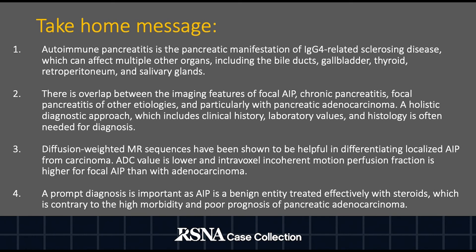Take-home message: autoimmune pancreatitis is the pancreatic manifestation of IgG4-related sclerosing disease, which can affect multiple other organs including the bile ducts, gallbladder, thyroid, retroperitoneum, and salivary glands. There is overlap between the imaging features of focal autoimmune pancreatitis, chronic pancreatitis, focal pancreatitis of other etiologies, and particularly with pancreatic adenocarcinoma.